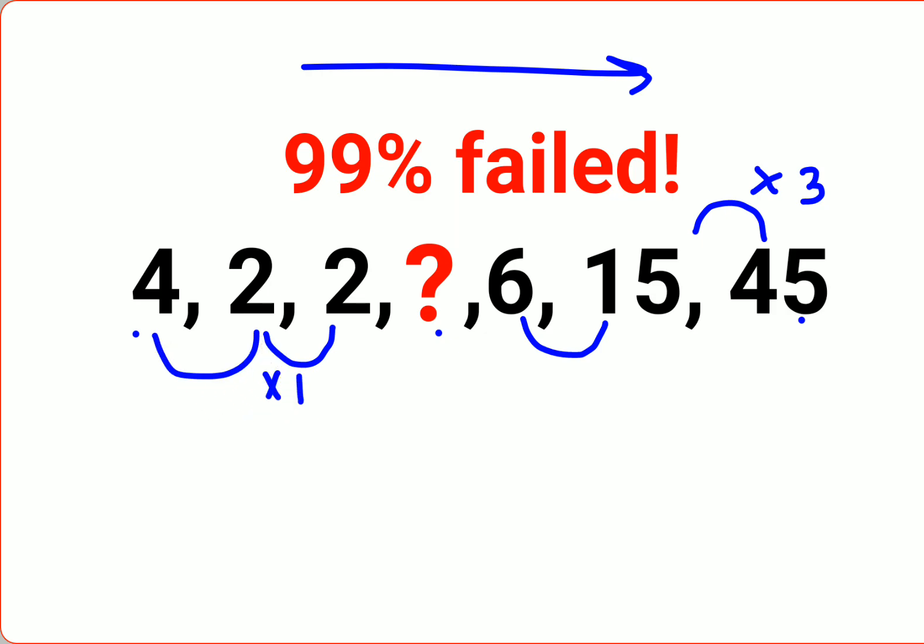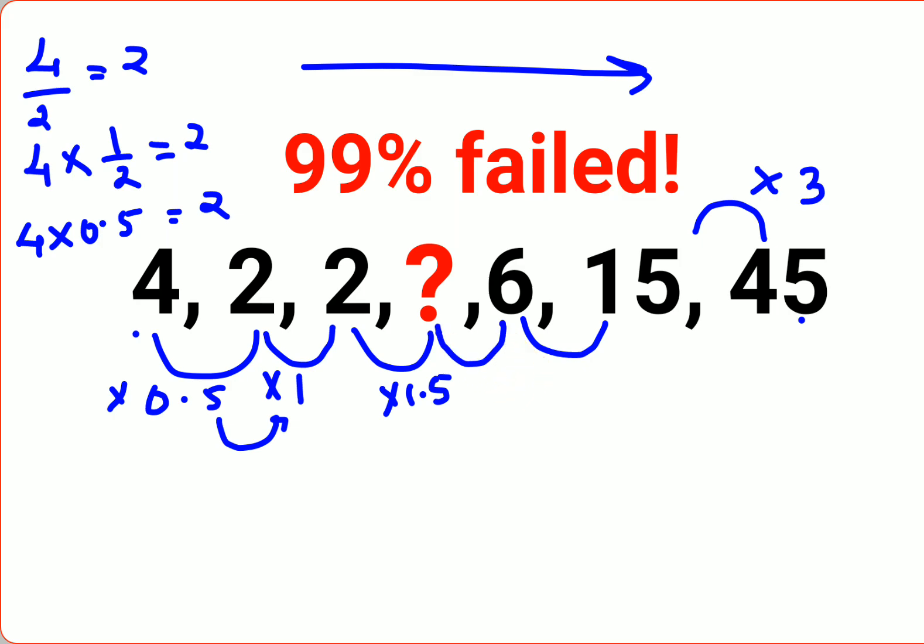If you see, 4 divided by 2 gets you 2, or I can say 4 multiplied by 1 upon 2 gets you 2. So 4 into 0.5 gets you 2. This can be written as what into 0.5, and this got multiplied by 1, meaning 0.5 got added by 0.5. So maybe this we should multiply by 1.5.